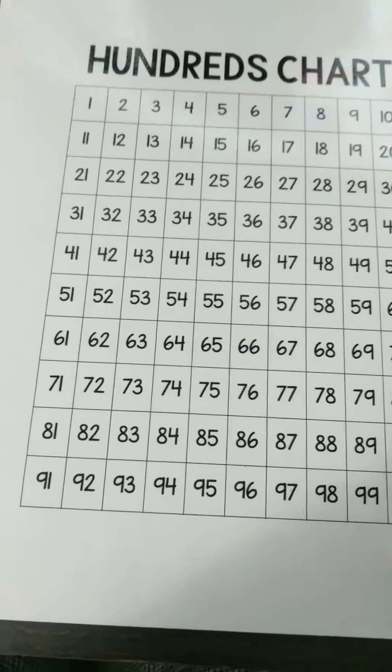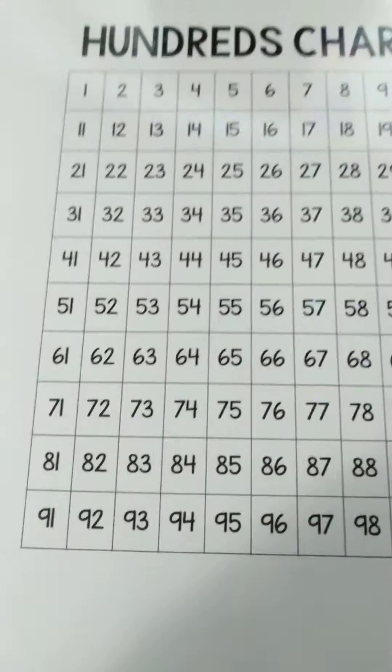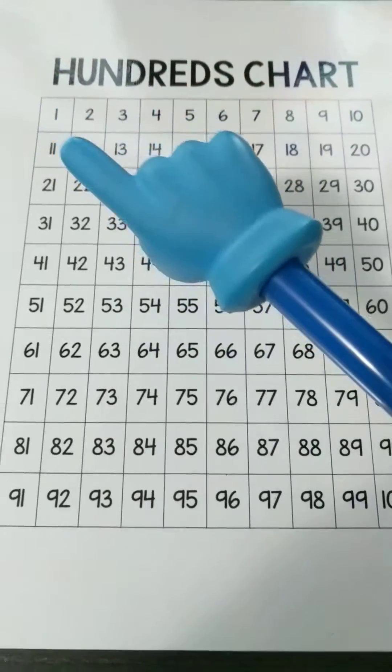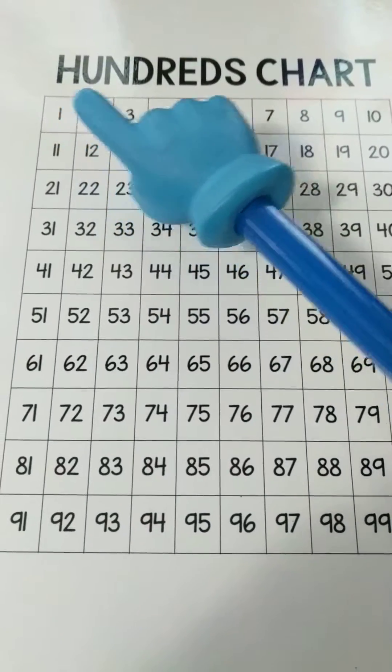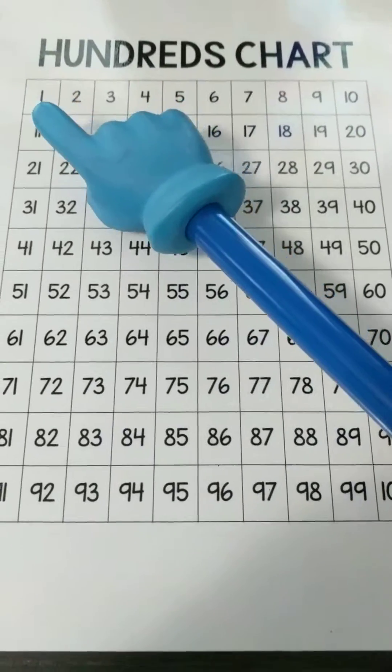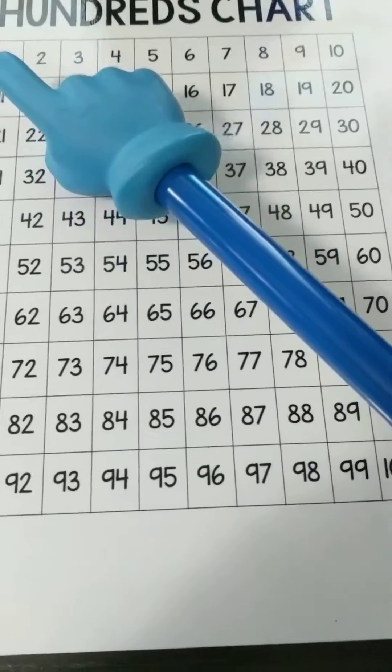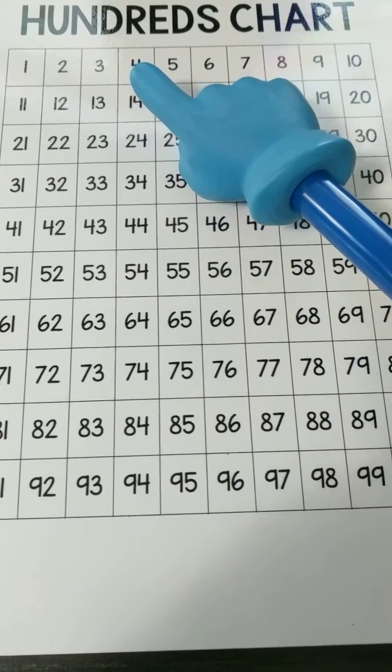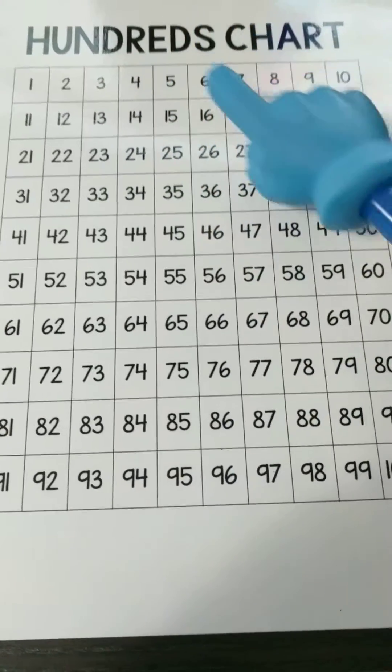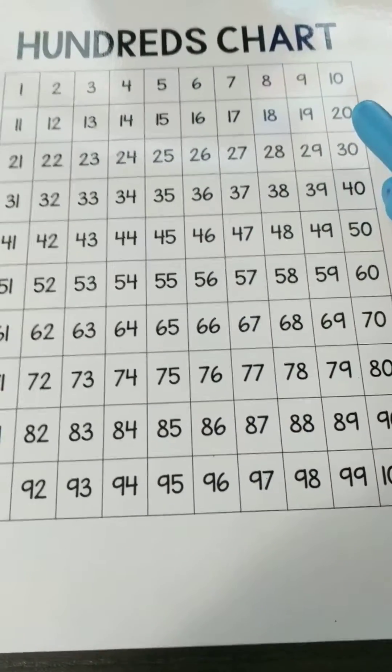What you want your child to do is with their finger - I'm using a pointer - have them touch each number and as they touch the number, have them say the number. So for example, 1, 2, 3, 4, 5 and have them go until 20.